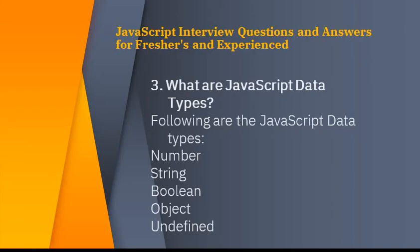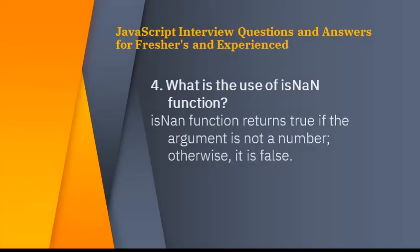What are the JavaScript data types? The following are the JavaScript data types: number, string, boolean, object, and undefined. These are the data types of the JavaScript programming language.